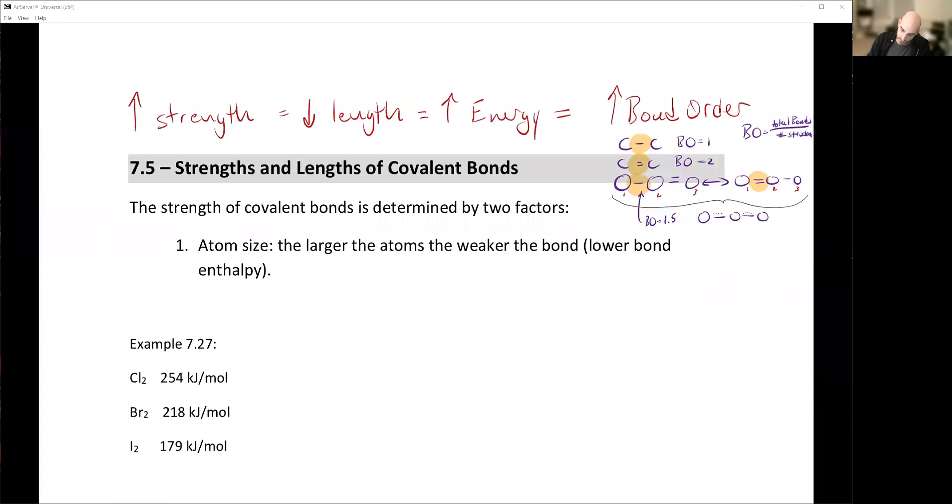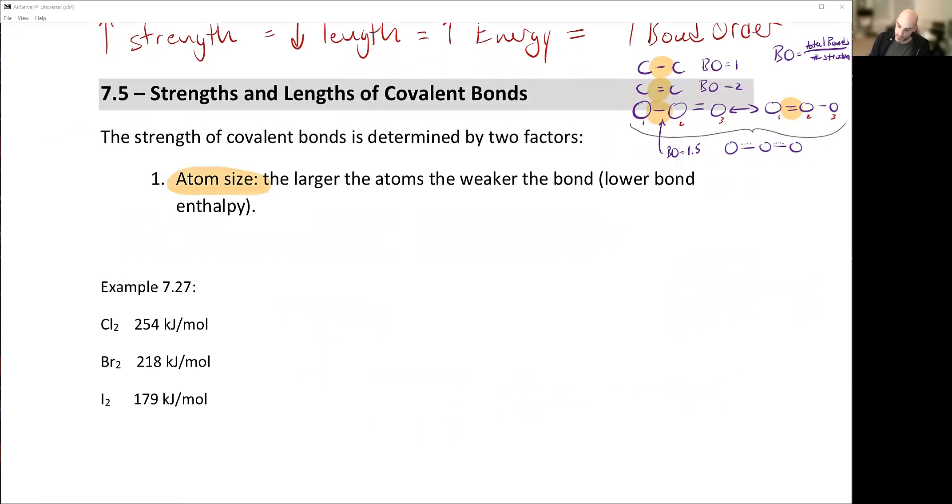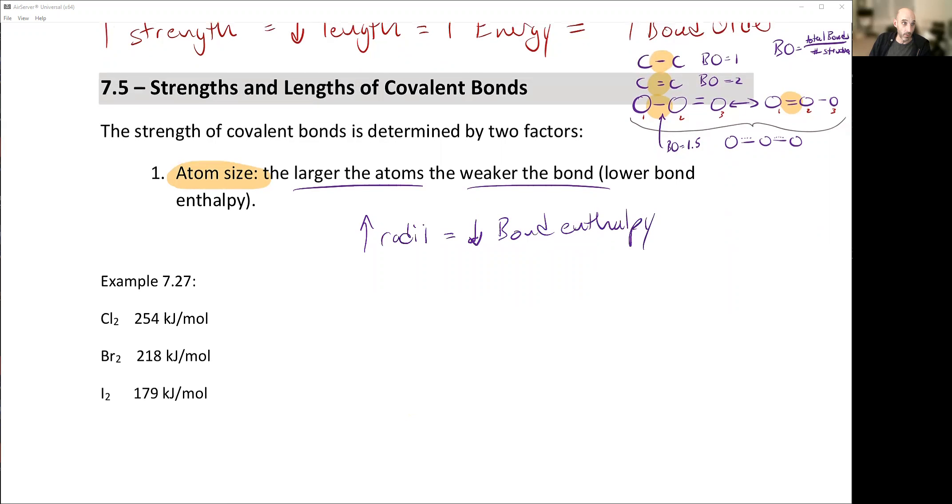So strengths and lengths of bond. Atomic size. The larger the atom, the weaker the bond. Therefore, they have a lower bond enthalpy. So increase in radii or size equals a decrease in bond enthalpy.